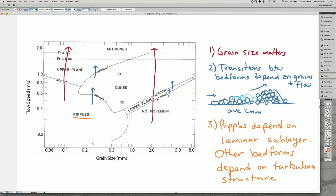So in general, when you go from ripples into dunes, you're going from an effect of the laminar sub-layer into more of the turbulence of the boundary layer.